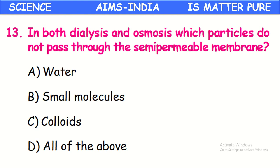In both dialysis and osmosis, which particles do not pass through the semi-permeable membrane? A semi-permeable membrane contains very small holes that allow pure liquid through, but small solid particles remain on the first side. Those particles are called colloidal particles. So colloidal particles cannot pass through the semi-permeable membrane — only liquids like water will pass.